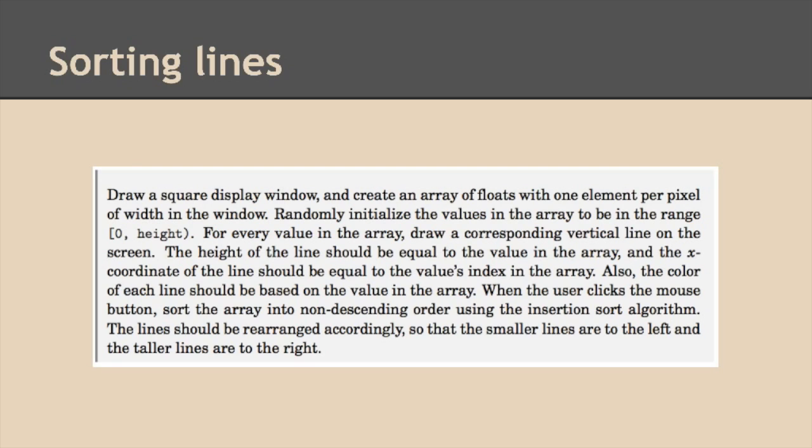So what we're going to do is draw a square display window, create an array of float values that have one element per pixel of the width of the window. We'll initialize all those values in the array to be in the range between zero and height. We'll do that randomly. And then for every value in the array, we'll draw a corresponding vertical line on the screen. And that height should be equal to the value in the array. The x-coordinate should be equal to the value's index in the array.